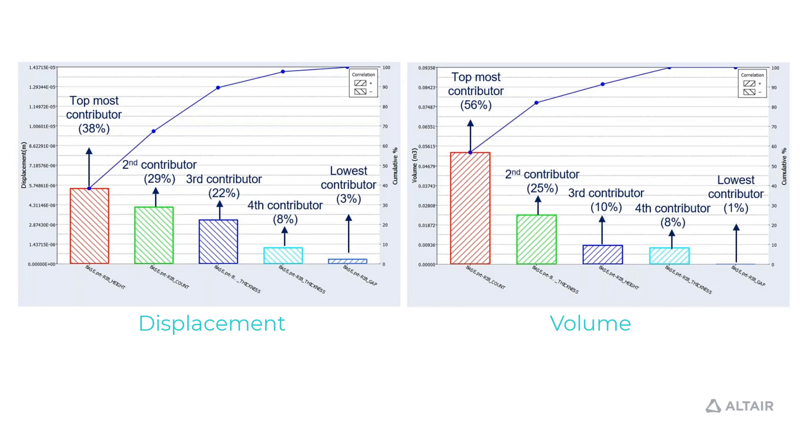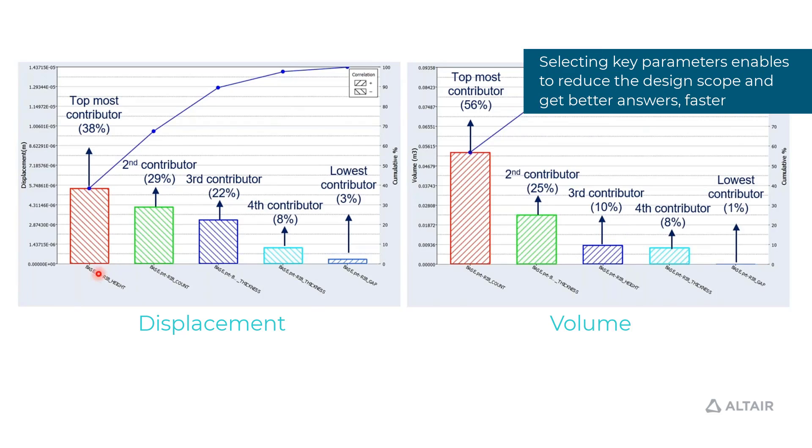What are the most important parameters here are the rib height, the rib count, and pump wall thickness. We can ignore these three parameters while doing an optimization. That's how we have reduced the design scope and we can find out much better answers in less number of iterations.